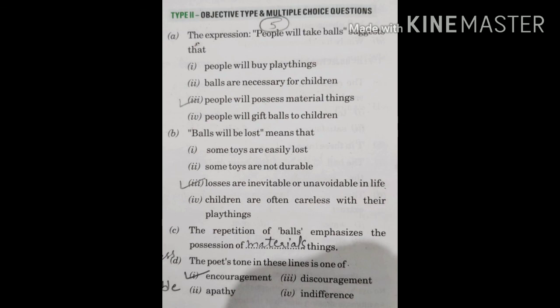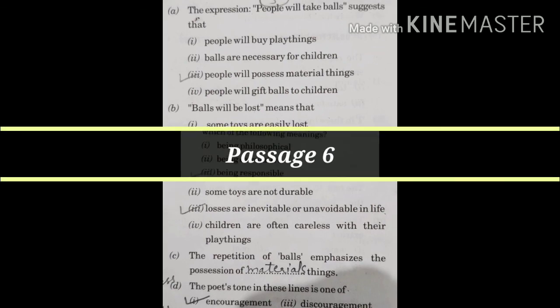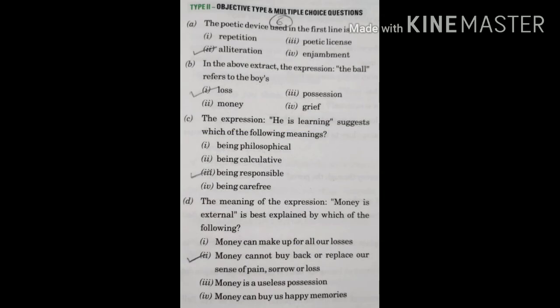The poet says you have to face the loss bravely and move forward in your life. Look at the sixth passage, given according to the lines: 'And no one buys a ball back, money is external. He is learning well behind his desperate eyes.' The poetic device used in the first line — the letter 'b' has been repeated in these lines, so that is called alliteration.